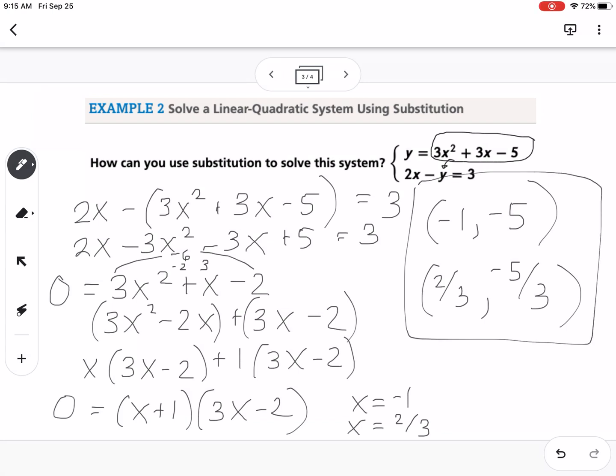And you could always verify this by going to Desmos and typing in 3x squared plus 3x minus 5, and then you would also need to take the second equation and solve it for y. So that way you could plug that into Desmos as well and see where those intersect. Make sure that they intersect at the correct points that you got algebraically.